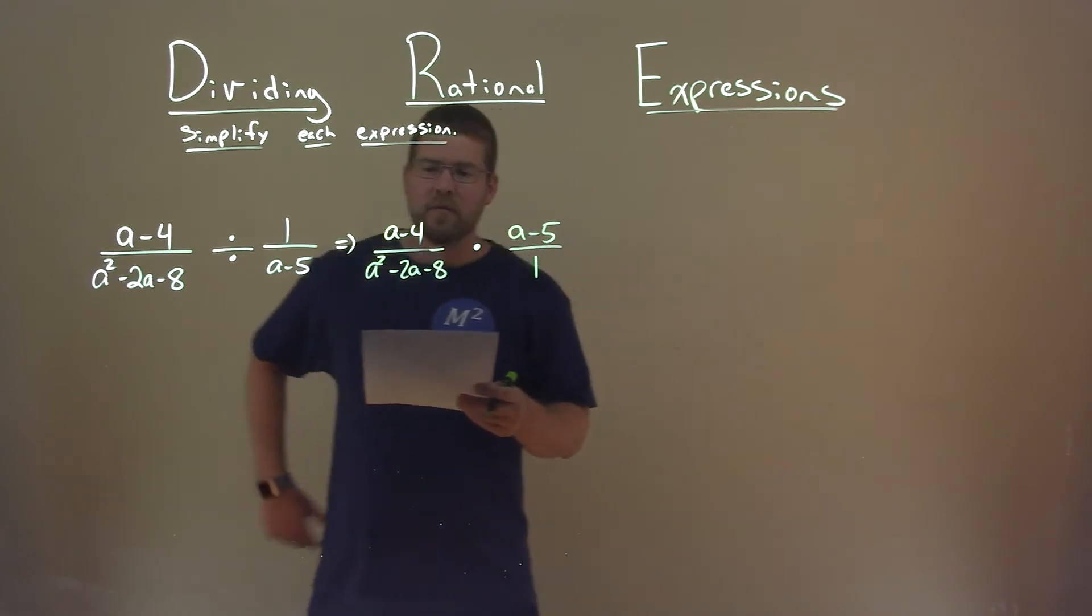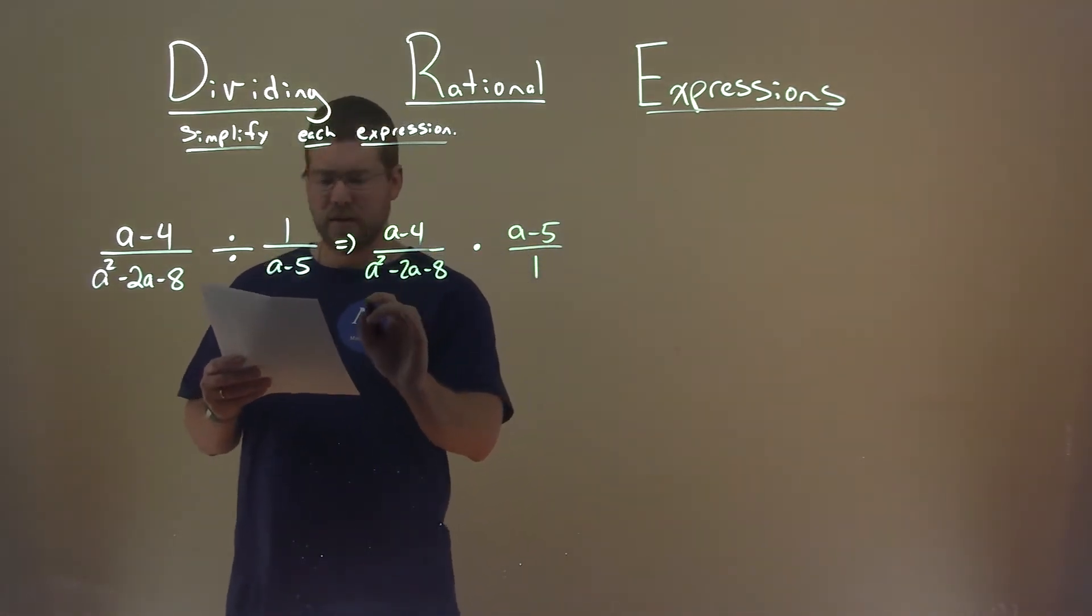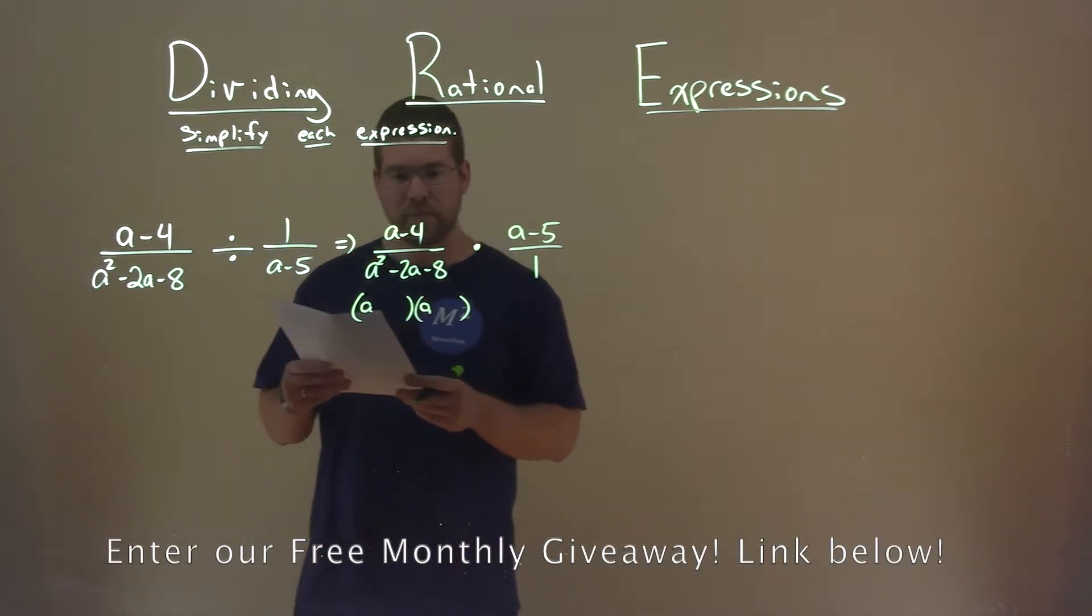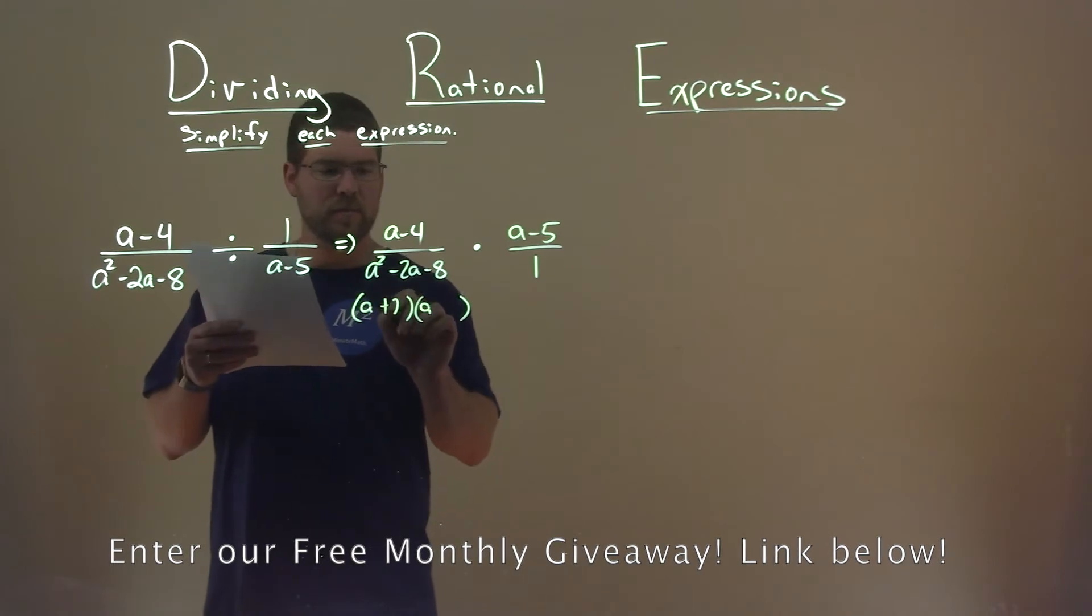All right, so now let's see what we can factor. Well, down here, I can factor that out. What two numbers multiply to be negative 8 and add to be negative 2? That is a positive 2 and a minus 4.